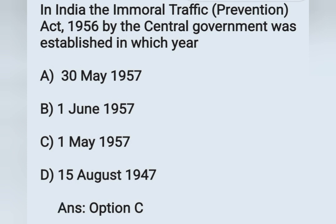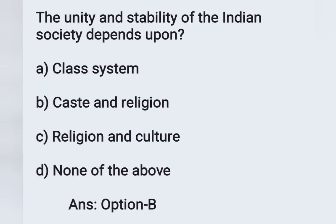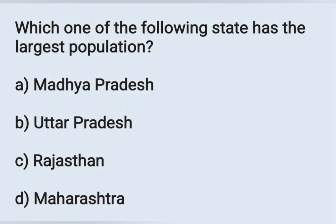The next question: the unity and stability of Indian society depends upon — Options: A) Class system, B) Caste and religion, C) Religion and culture, D) None of the above. The unity and stability of Indian society mainly depends upon caste and religion. Option B is the correct answer.